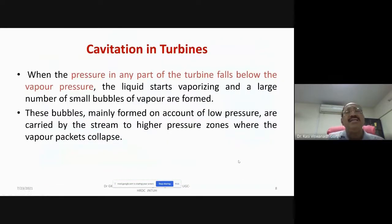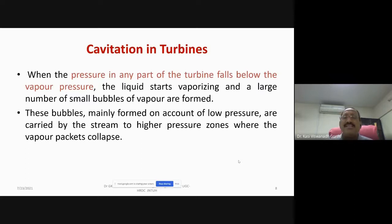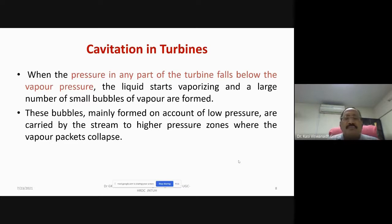The next topic is cavitation in turbines. Where does this cavitation occur, and is it a desirable phenomenon? When the pressure in any part of the turbine falls below the vapour pressure, the liquid starts vaporizing and a large number of small bubbles of vapour are formed. This happens because of the fluid property — vapour pressure. For a flowing fluid, at any section where the pressure is dropping below the vapour pressure, there will naturally be vaporization.